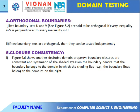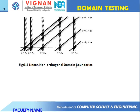Another described domain property: boundary clauses are consistent and systematic — the shaded boundary domains belong to the domain with shading. The boundary lines belong to domain one line boundaries on the right. This is the boundary closure consistency — these are the boundary linear and non-linear domain boundary implementations.